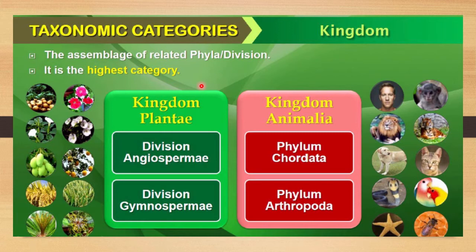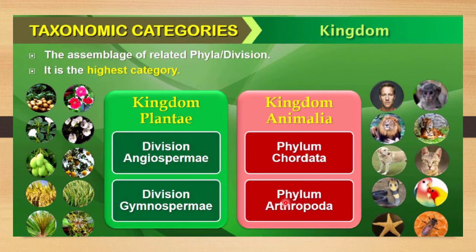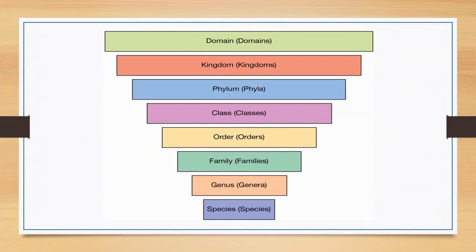The highest category is kingdom — the assemblage of related phyla in animals, or related divisions in plants. Almost two kingdoms appear on the earth: kingdom Plantae, which includes plants, and kingdom Animalia, which includes animals. All divisions like Angiospermae and Gymnospermae together form kingdom Plantae, and all phyla like Chordata and Arthropoda together form kingdom Animalia.